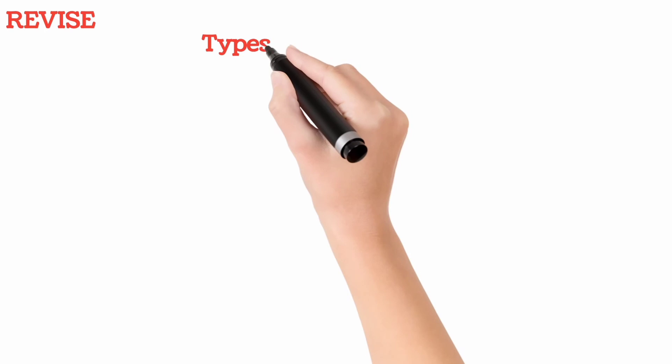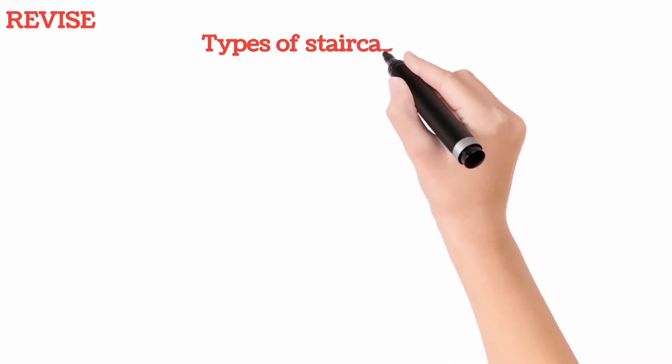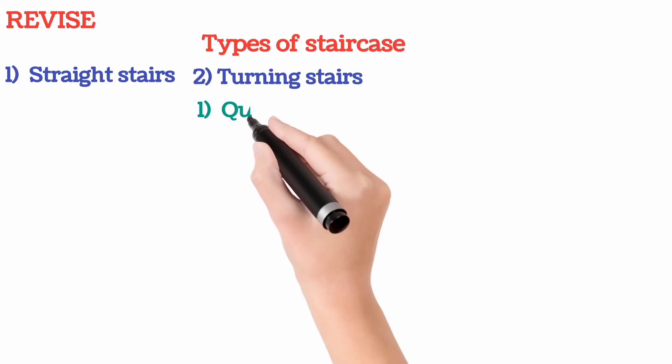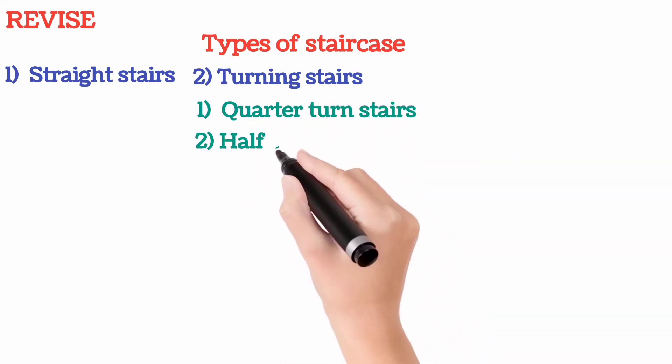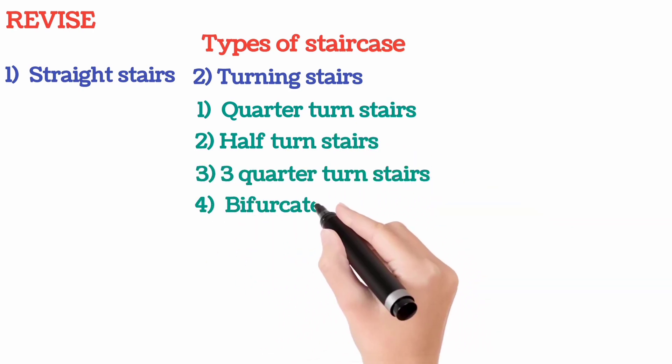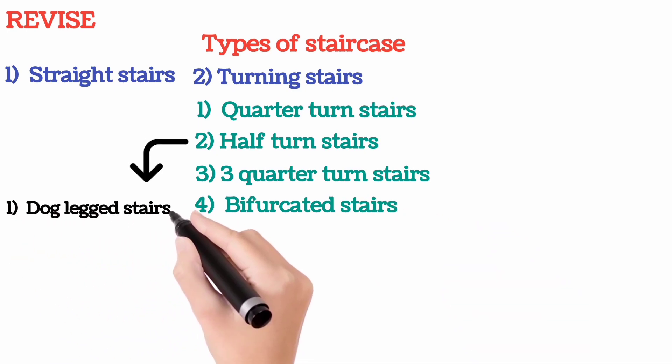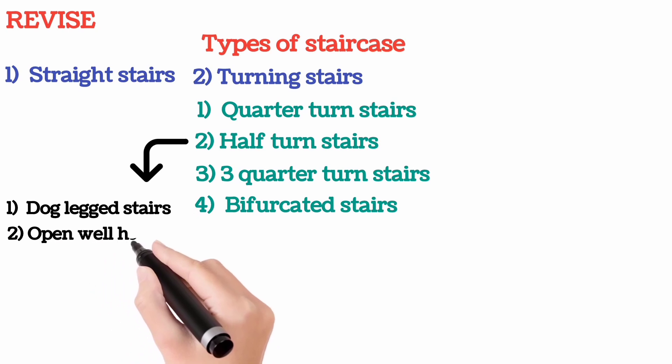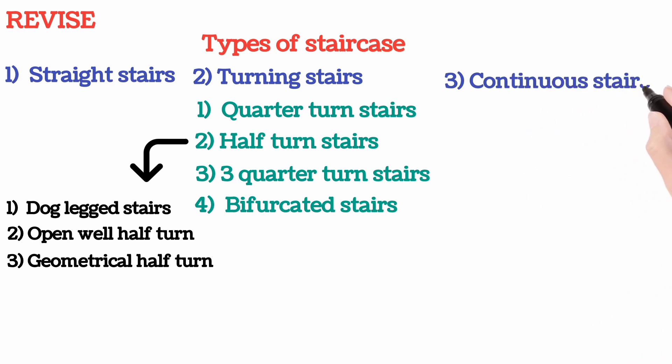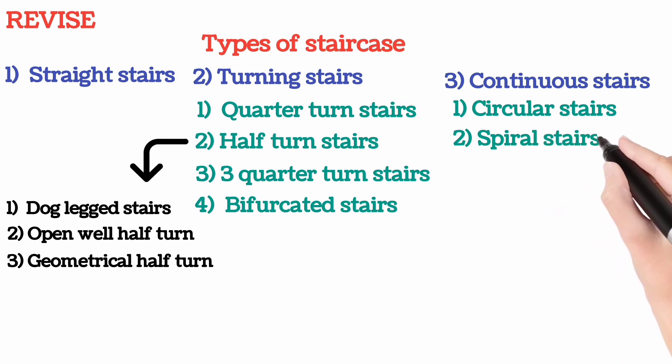Now let's revise. Types of staircase: 1. Straight stairs, 2. Turning stairs, which is further classified into Quarter turn stairs, Half turn stairs, Three quarter turn stairs, and Bifurcated stairs. Half turn is further classified into Dog leg stairs, Open well half turn, and Geometrical half turn. 3. Continuous stairs: Circular stairs, Spiral stairs, Helical stairs.